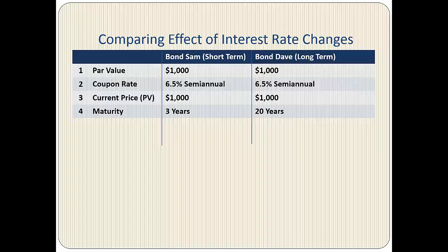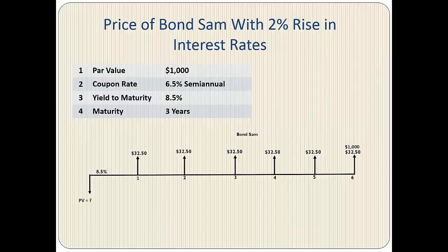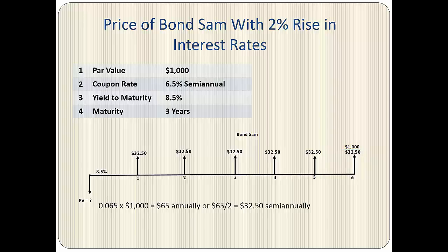We need to calculate the price of the bonds when the yield to maturity rises. We also need to calculate the price of bonds when the yield to maturity falls by 2% to 4.5%. Here is the timeline for bond SEM. The par value is $1,000. The coupon payment is 6.5% of $1,000, which equals $65 annually or $32.50 semi-annually. To find the present value, we are going to discount the cash flows by 8.5%, which represents a rise in the yield to maturity of 2%. The bond matures in three years or six semi-annual periods.